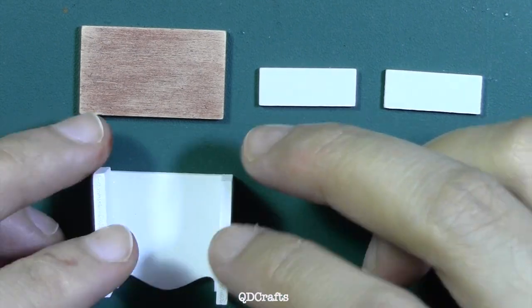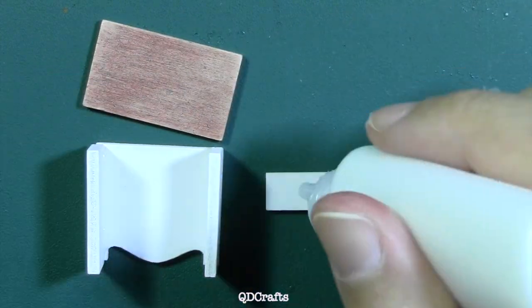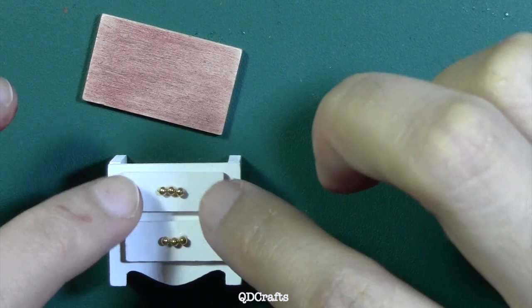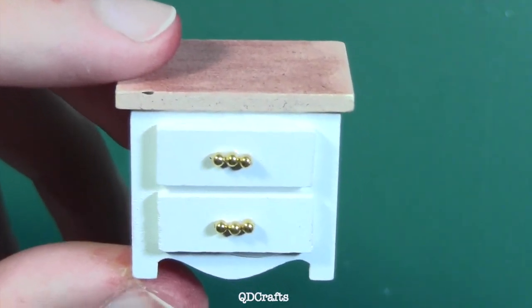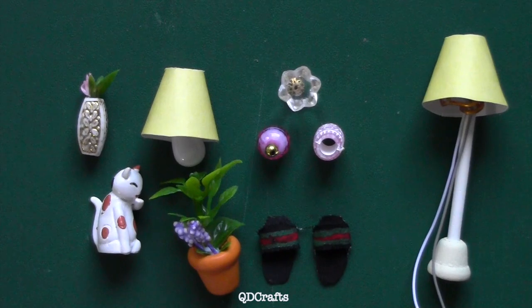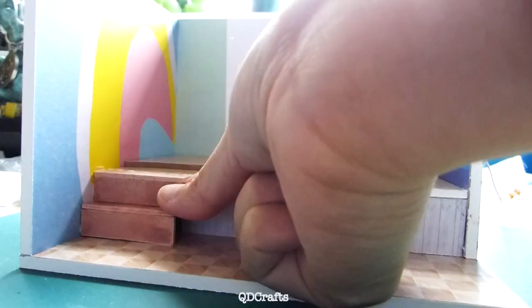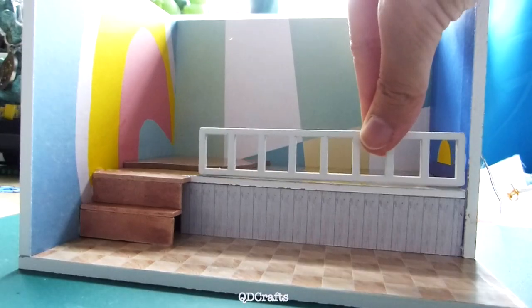Lastly this is the bedside cabinet, again it's very straightforward build and we're almost done guys. These are the other miscellaneous items that I assembled off camera and now it's time for everything to come together.